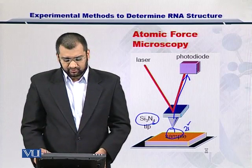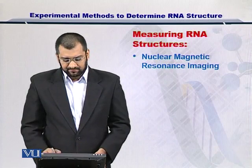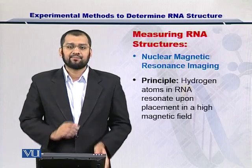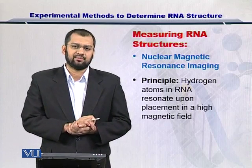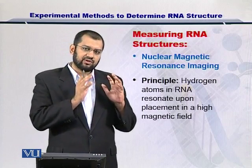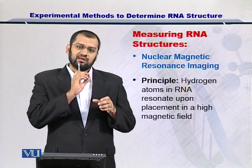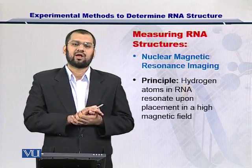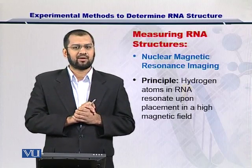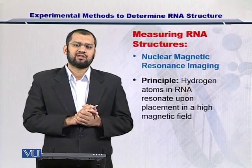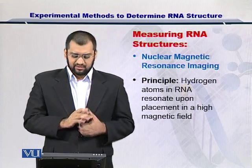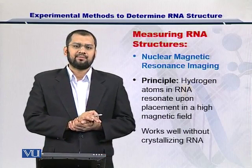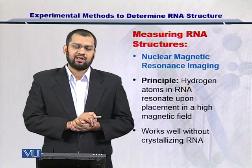Besides atomic force microscopy, there is another technique: nuclear magnetic resonance imaging. In this technique, the hydrogen nuclei within the RNA molecule, once the molecule is placed within a very high magnetic field, resonate, and we can measure this resonance to estimate the two prime or the three prime structure. NMR is a little bit expensive and therefore needs to be used selectively. Importantly, crystallization is not required in this case either.